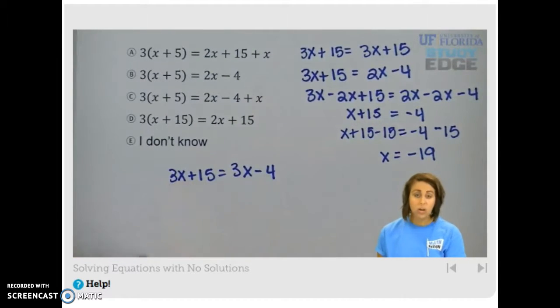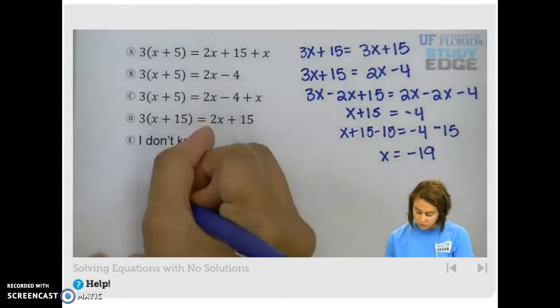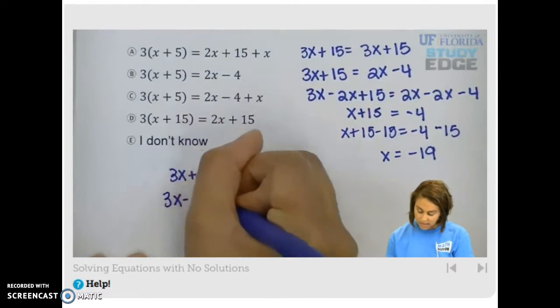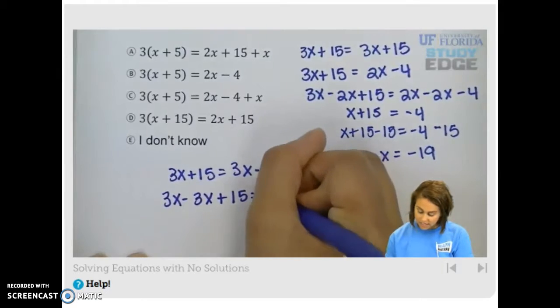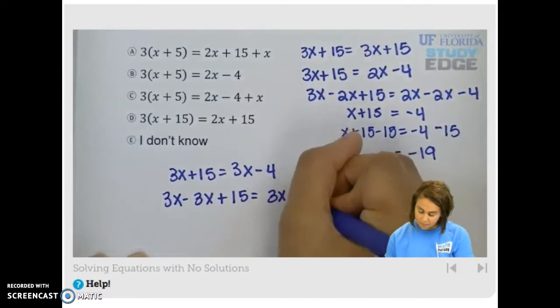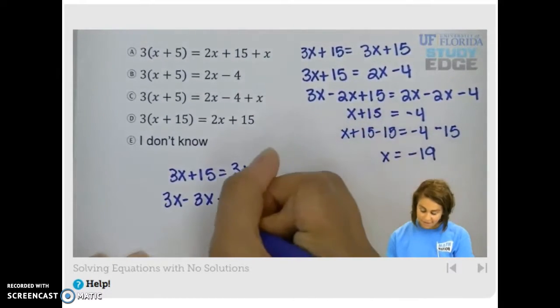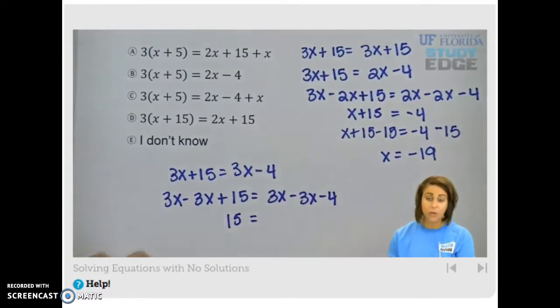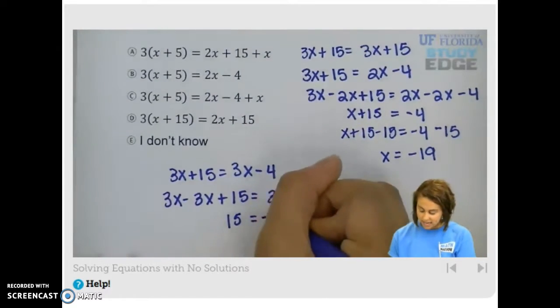So we want to subtract 3x, right? So if we subtract 3x from both sides, on the left hand side we're going to be left with what? 15. And on the right hand side we're going to be left with what? Negative 4.